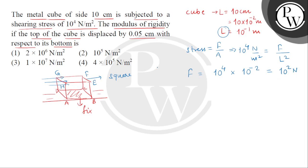Now देखते हैं, हमें given है that top of the cube is displaced by 0.05 cm with respect to bottom. H point H' पर आ गया, G at G', F at F', E at E'. So हमें X का answer मिला 0.05 centimeter.